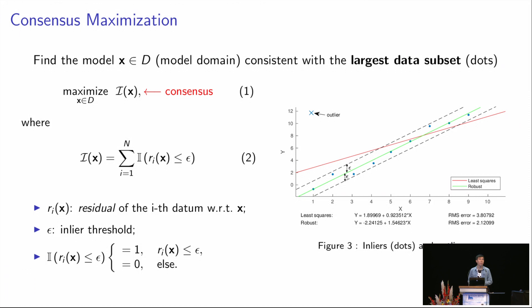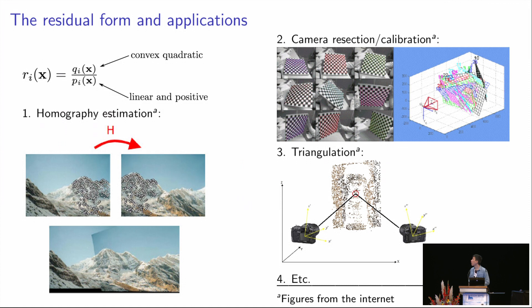In this work, we focus on the form that can be represented by a convex quadratic function QI divided by a linear and positive function PI. There are many computer vision applications that follow this form. For example, homography estimation, camera resection, triangulation, and so on.